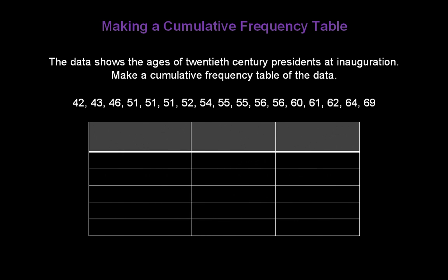Here's a blank table. Guess what we're going to call the first column? Well, what is this data? It's the ages of presidents at inauguration. Let's label the second column. That's always the frequency column. And what's the third column? You guessed it. It's the cumulative frequency.